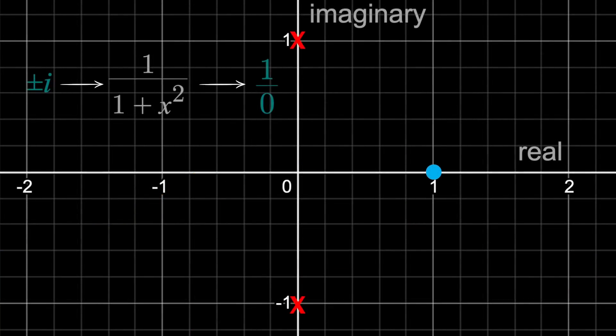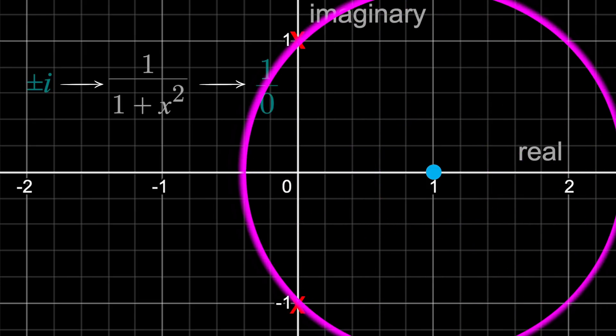So we were almost right. But instead of moving in opposite directions along the one-dimensional real number line in search of singularities, you actually need to move in all directions along the two-dimensional complex plane looking for singularities. And that distance will tell you the radius of convergence.